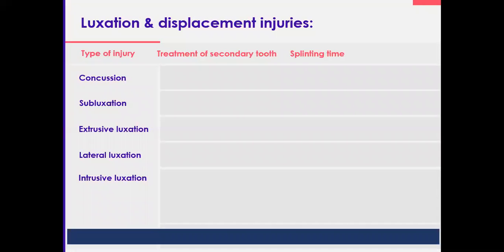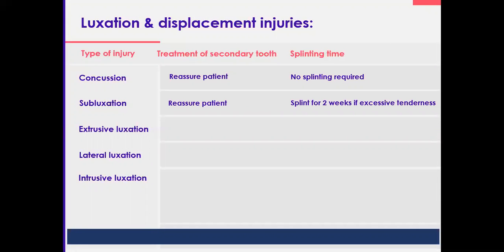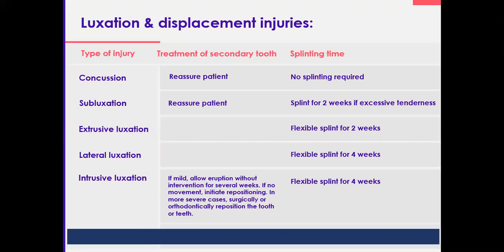To sum up: for concussions, reassure patients and monitor. For subluxation, reassure and splint for two weeks if it is tender. For extrusive luxation, again reassure and splint for two weeks with a flexible splint. For lateral luxation, splint for four weeks. And for intrusions, it depends: if it is mild, allow eruption for a good few weeks; if there is no sign, go for digital repositioning. In severe cases, reposition, or if the tooth has completely disappeared, you will need surgical orthodontic repositioning — but if you are facing something like that, refer the patient. You've got time for it.